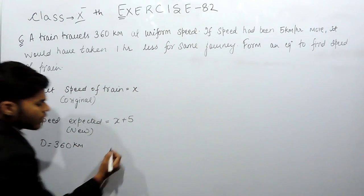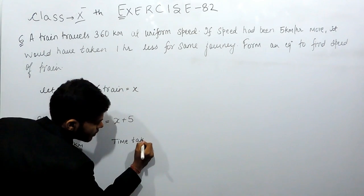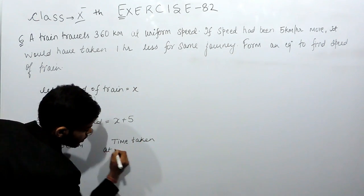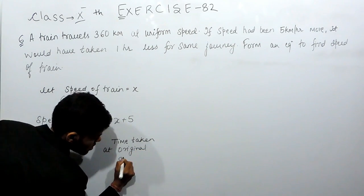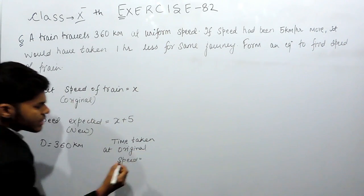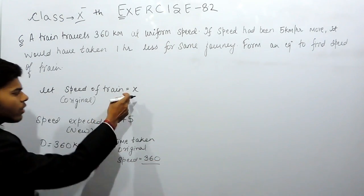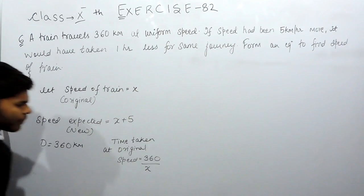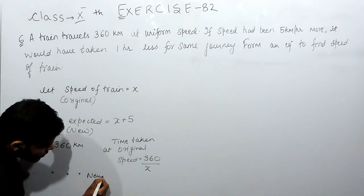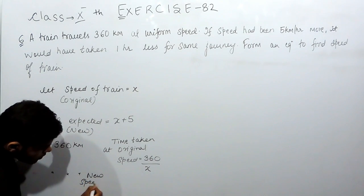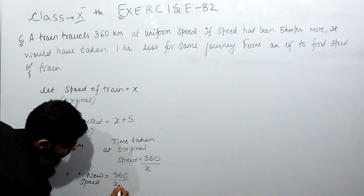So, we have to find first of all time taken at original speed. It will be equals to distance upon speed, and the original speed was x. Now, time taken at new speed is equals to 360 upon x plus 5.